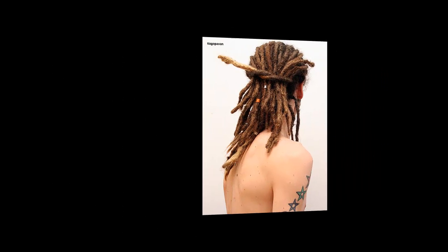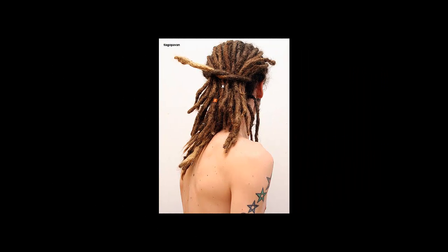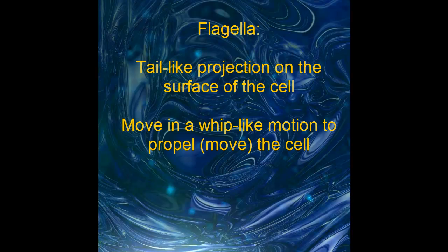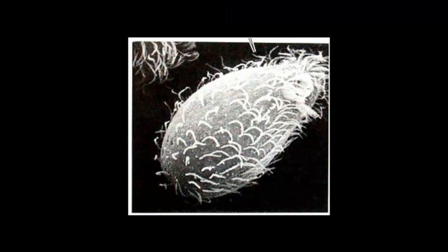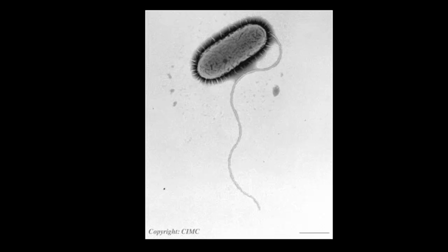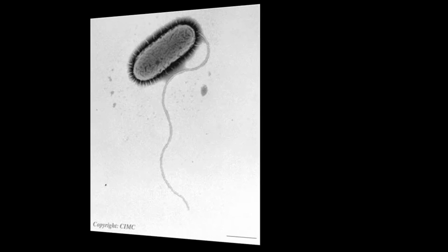Flagella are thicker and longer projections — these are like dreadlocks. Imagine a cell with dreads. The flagella move in a whip-like motion, and they actually propel the cell — they allow the cell to move. So there's a picture here: this is a cell covered with cilia, and this is a cell with one single flagellum.